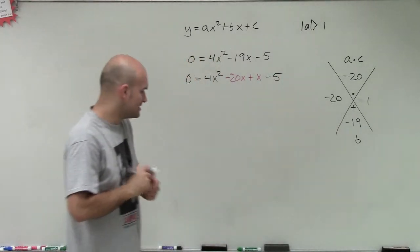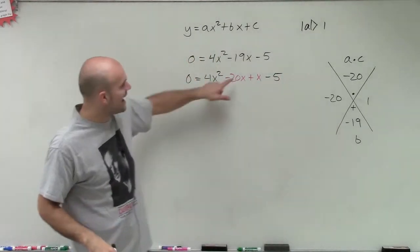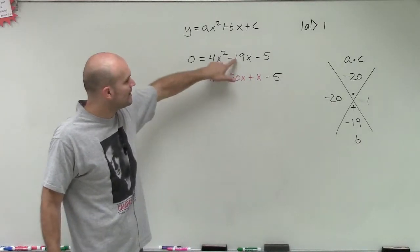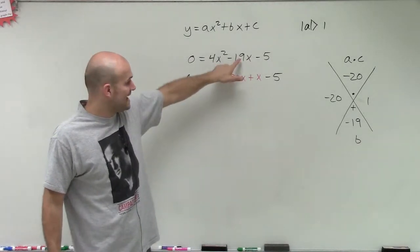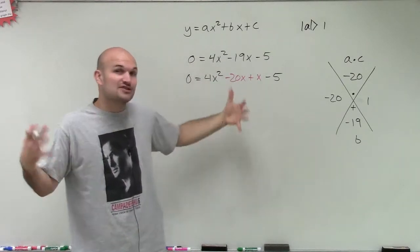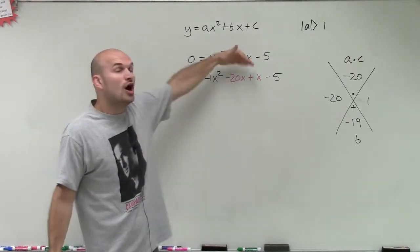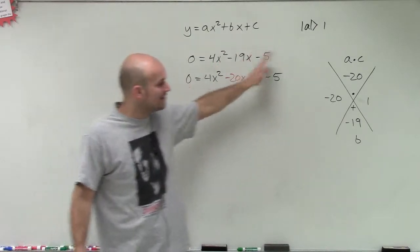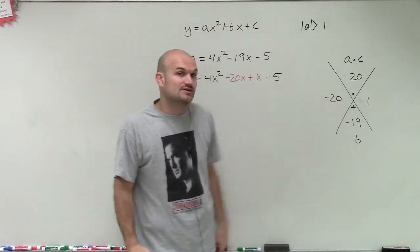You can see what I've now done is I've rewritten my middle term, negative 19x, as negative 20x and positive 1x. I haven't changed the value of my equation at all. I simply rewrote it in a form that we determined by using this method. Now I'm going to apply factoring by grouping.